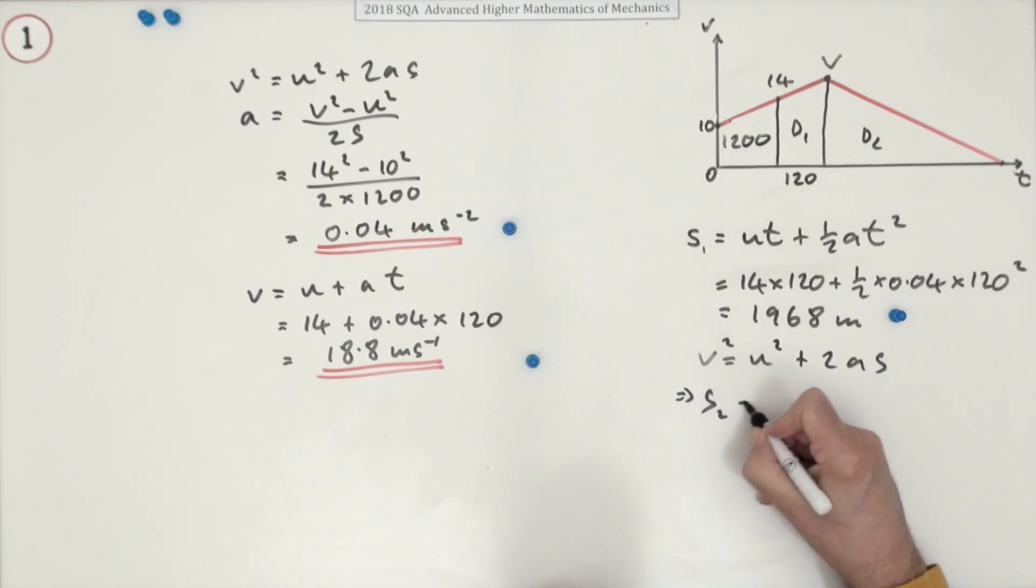Rearranging to s, which we'll now call s2. v squared minus u squared over 2a. v squared, 0, came to rest.